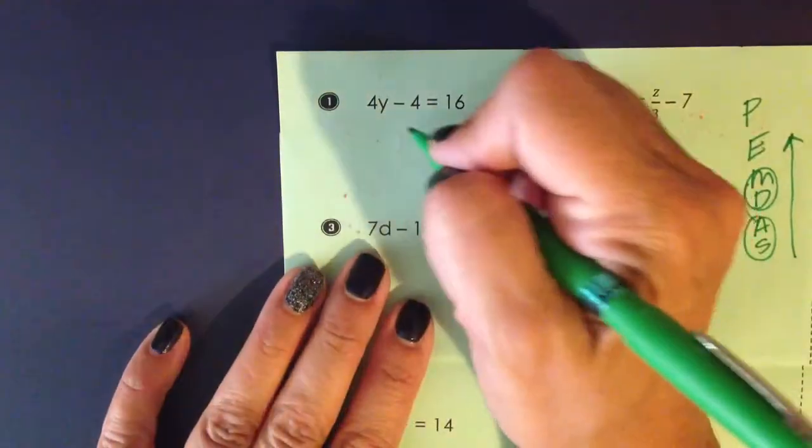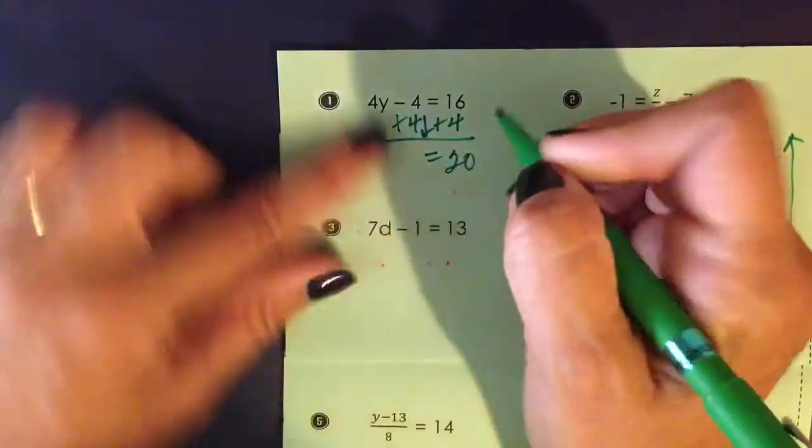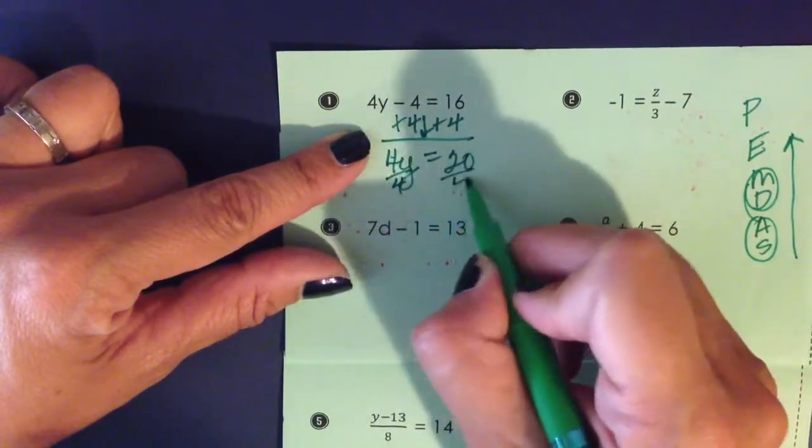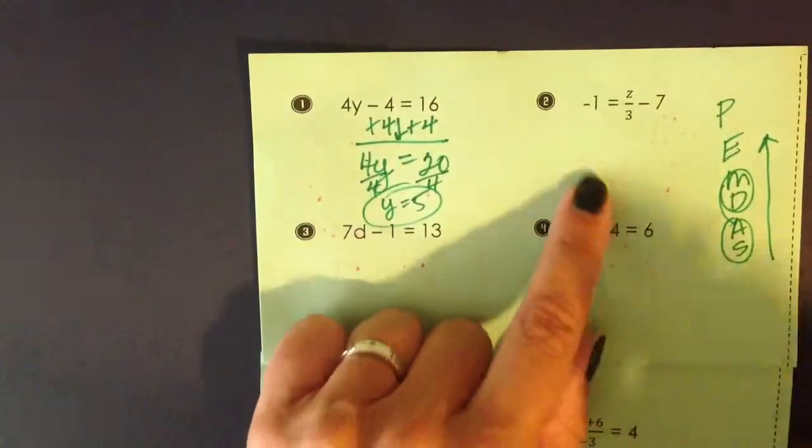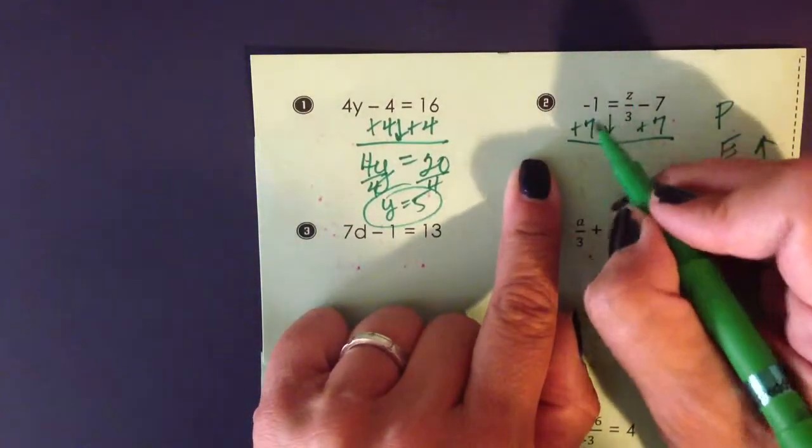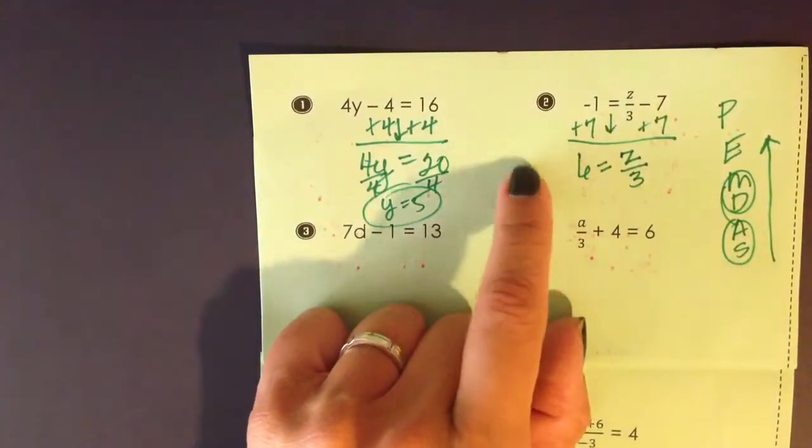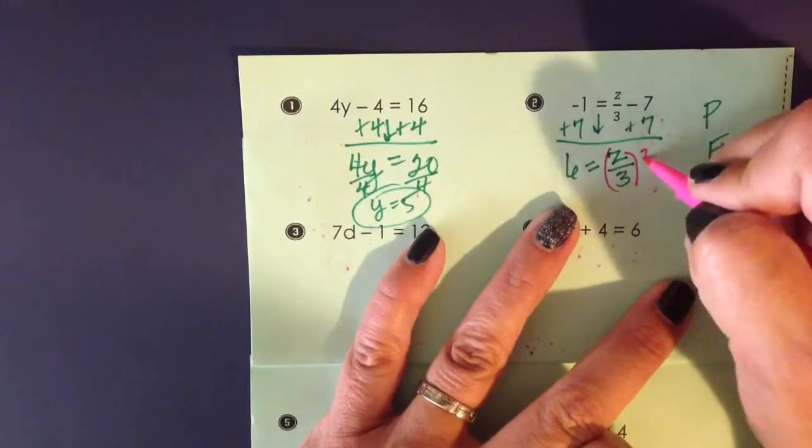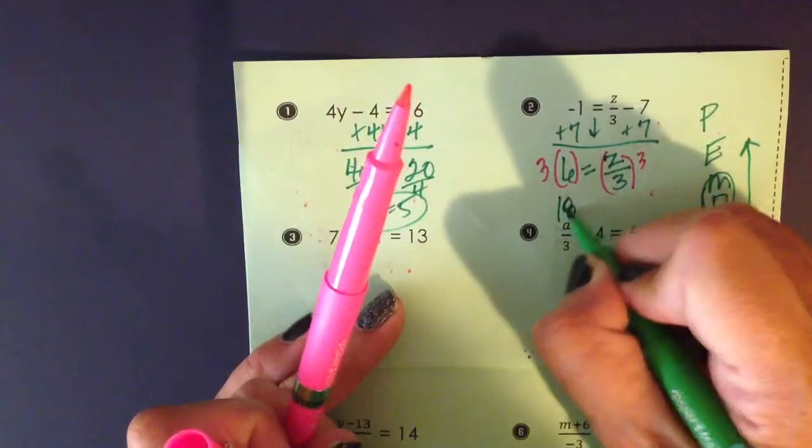So in number 1, I'd be adding 4 to both sides first. I'm left with 4y on the left-hand side. I'm going to divide both sides of the equation by 4, y is 5. Add 7 to both sides, undo that first. Negative 1 and 7 is 6. Remains with z over 3 on the right-hand side. I'm going to undo that z divided by 3 by multiplying both sides by 3, and then I'm going to get a final answer of 18 is z.